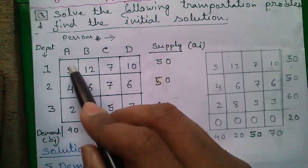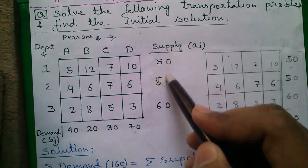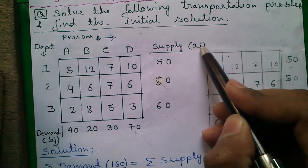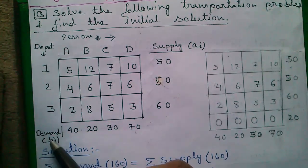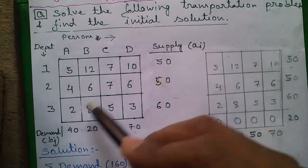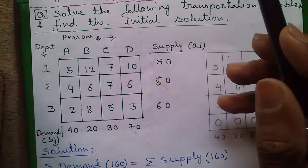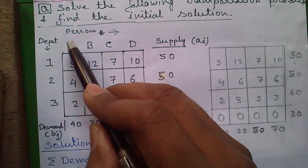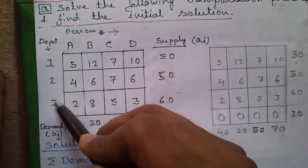First, some basics. This matrix is called the cost matrix. The outer numbers column-wise are called a_i (a subscript i), and the outer numbers row-wise are called b_j (b subscript j). In this question they are denoted by supply and demand, but the language may vary from question to question — the concept is the same. We have 4 persons: a, b, c, and d, and 3 depots: 1, 2, and 3.